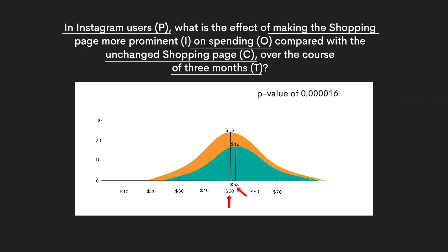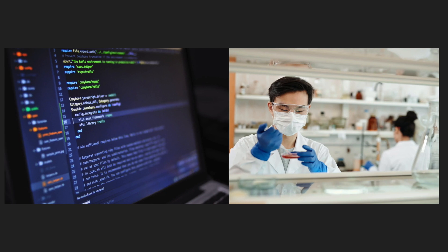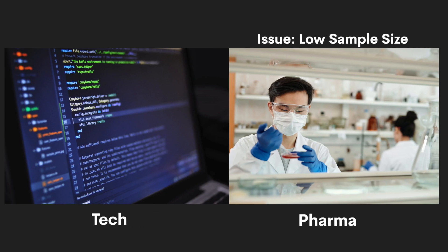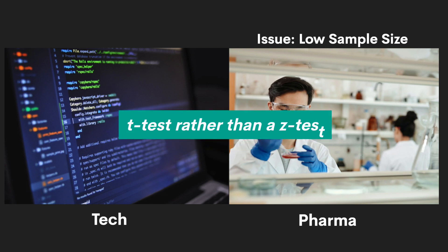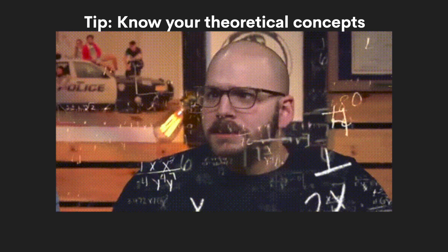For example, a p-value of 0.000016 means there's only a 0.0016% chance that what you got in your A-B test is pure luck or chance, which means there is a real difference between the two shopping pages. There are also many factors when choosing the right test — for example, if your sample size is less than 30, you'd use a t-test rather than a z-test. If you believe your sample mean could be greater, less than, or the same as the control mean, you'll choose a two-tailed test. It's important to know the theoretical concepts and why you're doing what you're doing, both for the interview and on the job.